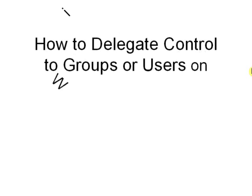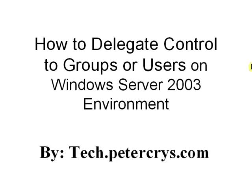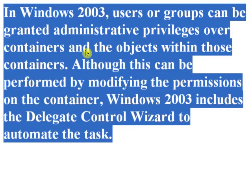How to Delegate Control to Group or Users on Windows Server 2003 Environment. In Windows 2003, users or groups can be granted administrative privileges over containers and the objects within those containers. Although this can be performed by modifying the permissions on the container, Windows 2003 includes the Delegate Control Wizard to automate the task.